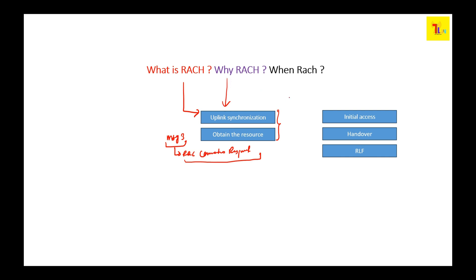Now the next question: when exactly is this RACH procedure going to occur? Whenever we switch on the UE, for initial acquisition or initial access purposes we are going to have this RACH procedure. We are also going to perform RACH at the time of handover. For handover, the RACH procedure used is contention-free RACH, or CFRA. For initial access it will be contention-based RACH.